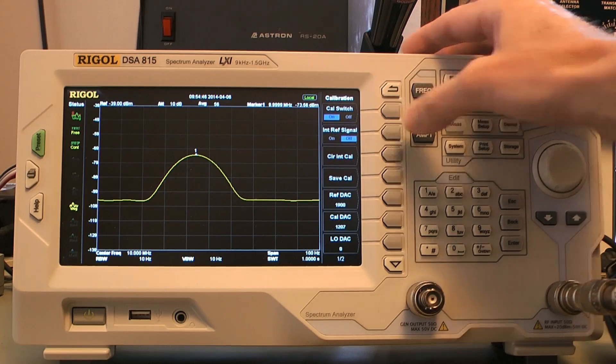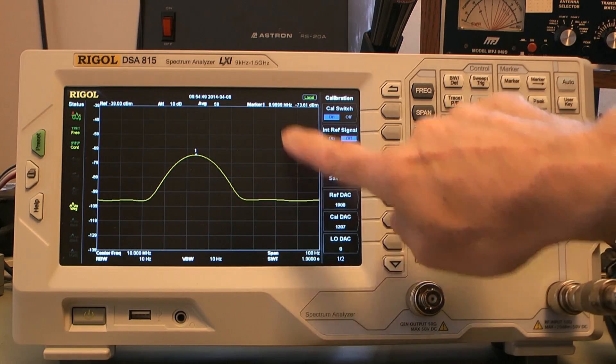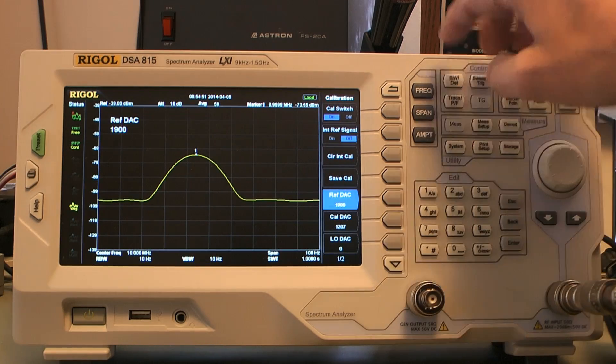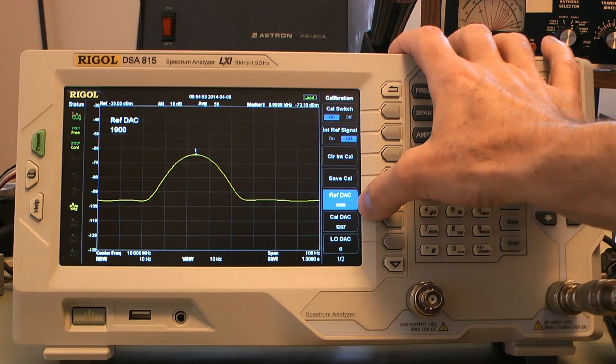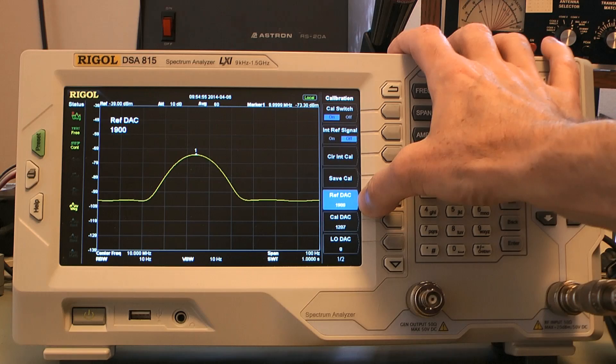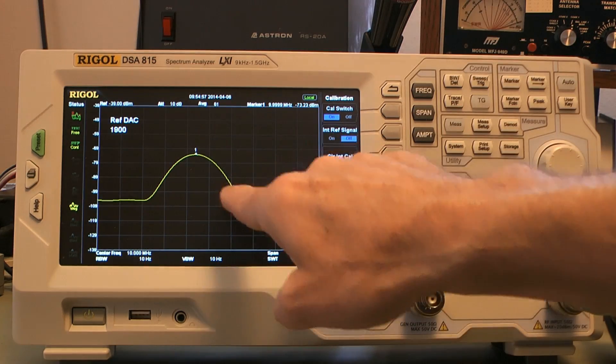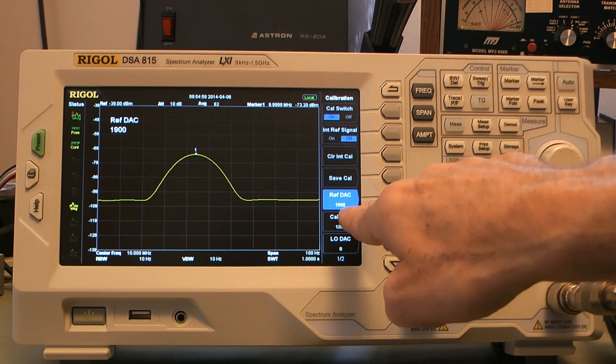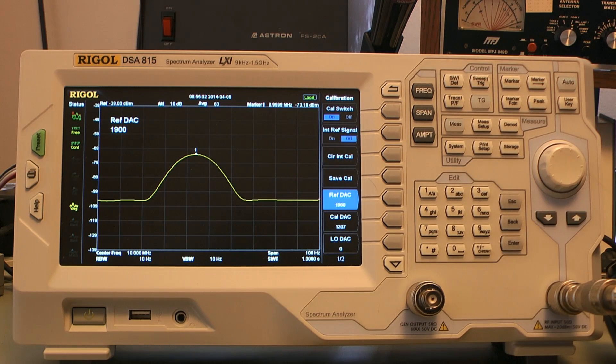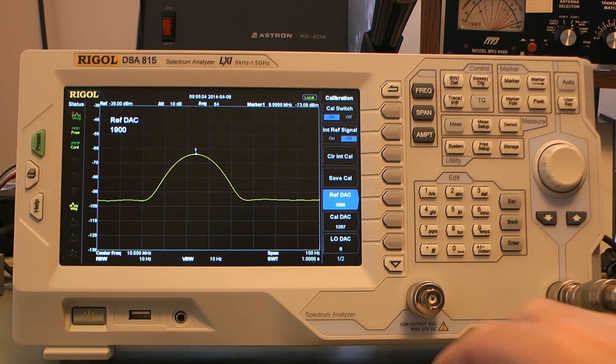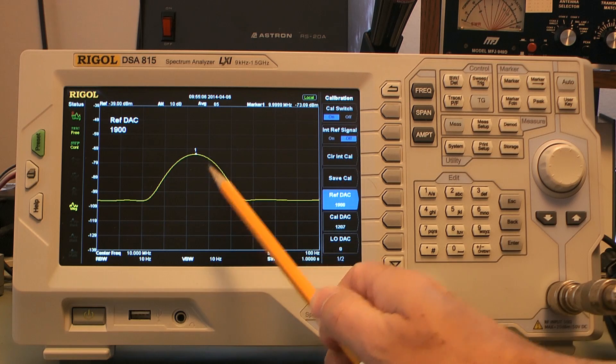And the one that we want for frequency is ref DAC. So the reference digital to analog controller is currently at 1900. I moved it there intentionally to move the signal off so that you can see that it is not at 10 megahertz.